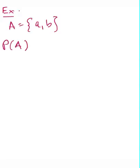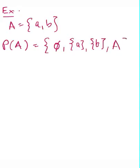Some examples. Let's say that A were equal to the set {a, b}, where a, b are just two elements of the set A. Well, if we were to compute the power set of A, we'd get it has four elements, namely the empty set, the set containing a, the set containing b, and then the set A itself.